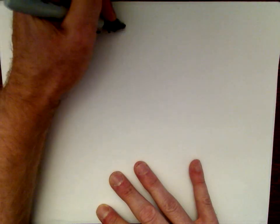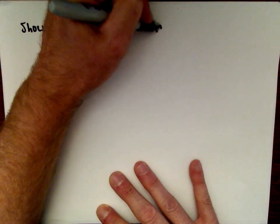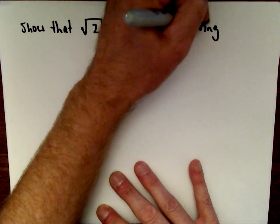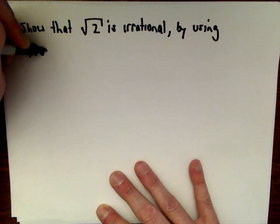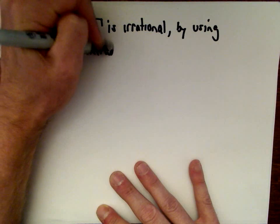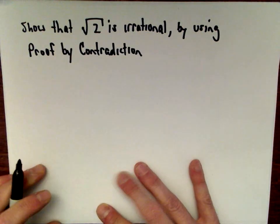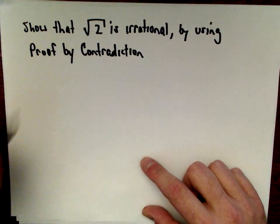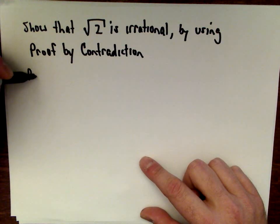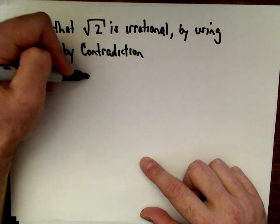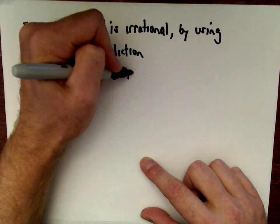We're going to show that the square root of 2 is irrational, and we're going to do this using the proof technique of proof by contradiction. We're going to assume something to be true, and eventually show that it can't be true. So, we start by assuming that the square root of 2 is rational.